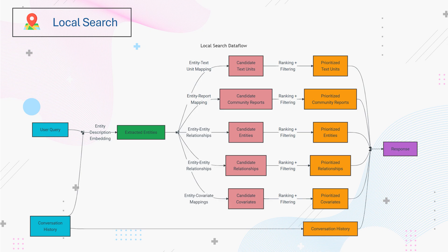Given a query, local search first identifies a set of entities from the knowledge graph which are semantically similar to the query. Next, entities, relationships, covariates, community reports, as well as the raw text units associated with those entities are extracted from the knowledge graph and passed as context for that query. For example, the query 'When did Alice first meet the white rabbit?' does not require a broader view of the document, as the answer lies in a very specific text chunk.